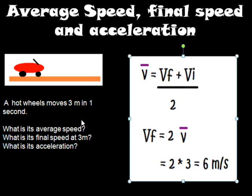So one thing we've got to do is assume that the hot wheel started from rest. Use some kind of launcher to launch it. And so the initial speed would be 0, like most starting of races. So if that's the case, if you start from 0 at a race, then your final speed should be twice your average speed. And we previously calculated the average speed to be 3, so that would make our final speed here at 3 meters 2 times 3, which is 6 meters per second.